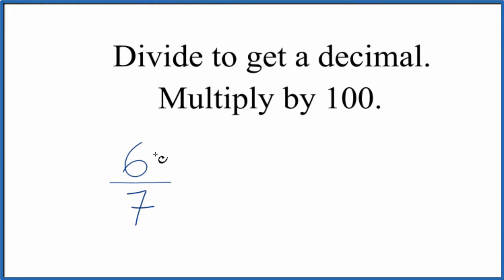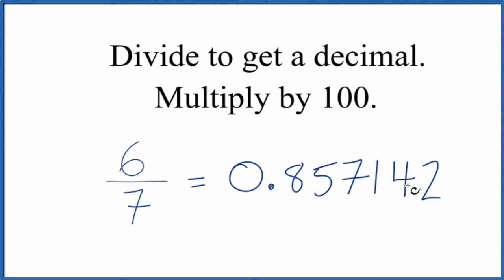So you can divide 6 by 7 by hand or you can do it on a calculator. 6 divided by 7, that gives us 0.857142. And this number here, it keeps repeating. So we'll stop there.